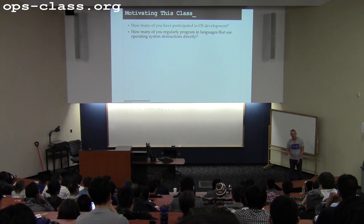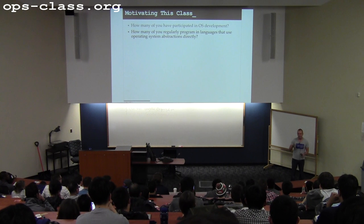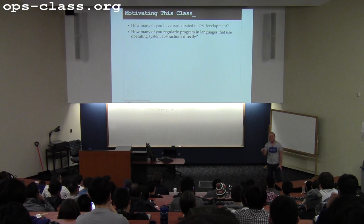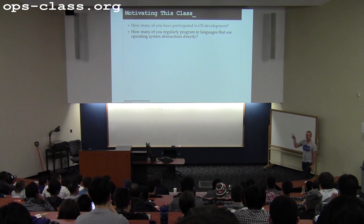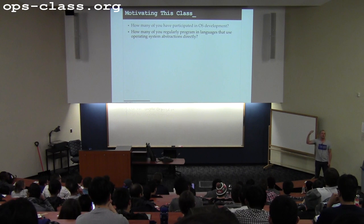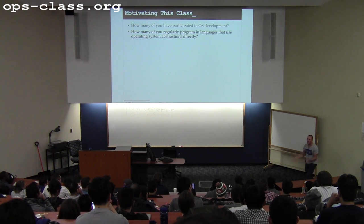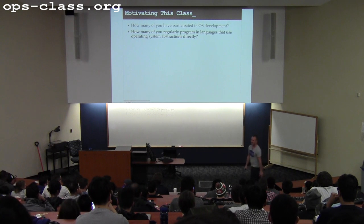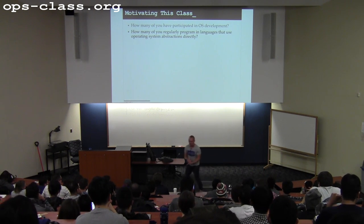The fact that there are so few hands up and so many computer programmers in this room is a sign of progress. If you're a sane human being, you're not writing code in languages that force you to lose these lower-level abstractions. Your life is too short. Stop writing C code. Write in Python or Go or something better. There are so many better languages out there. C is terrible. And you're going to write it all semester.